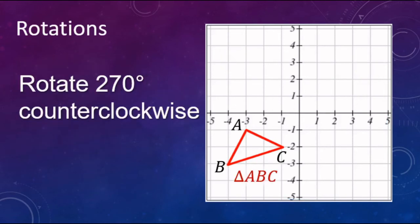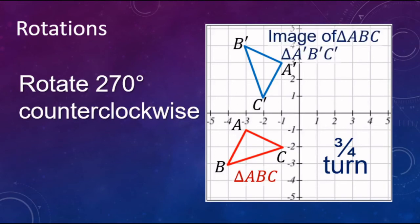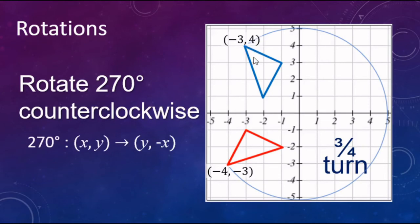And looking quickly at a 270 degree counterclockwise rotation — we're doing three quarters of a turn, moving three quadrants. There's your A prime, B prime, C prime, the image of triangle ABC. Looking at the coordinates: four, negative three turns to negative three, four. This is similar to the 90 degree rotation, except the X value switches its sign — so instead of negative four, it becomes positive four and goes into the Y position of your ordered pairs.